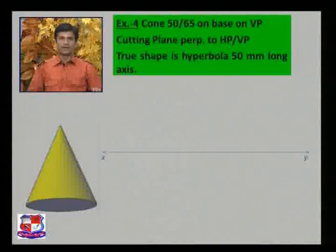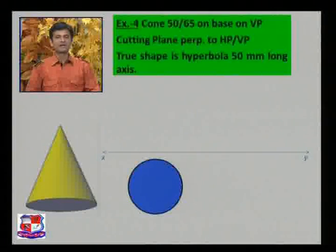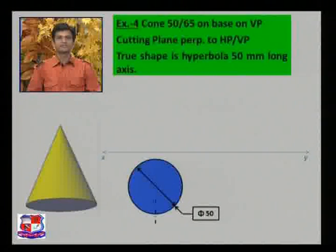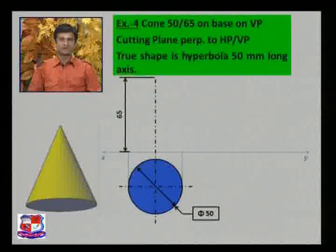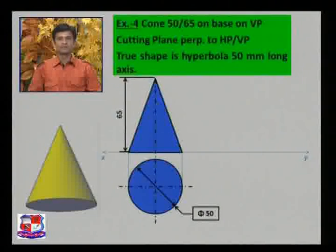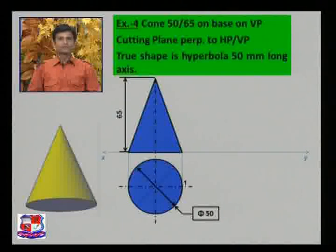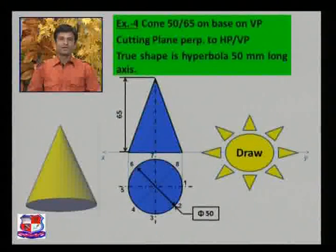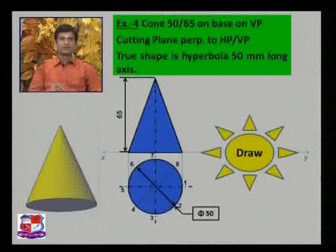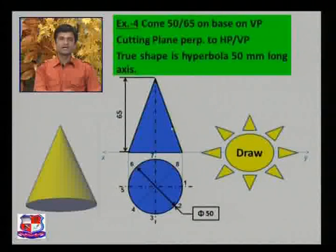The true shape is a hyperbola with a 50 mm long axis. The cone rests on a vertical plane — not on HP as in previous problems — with its circular face on the horizontal plane. The cutting plane is perpendicular to both HP and VP, but its position is not directly given. To draw the sectional plane, first draw a circle below the XY line with diameter 50 mm.